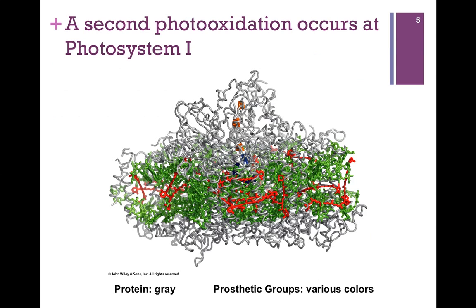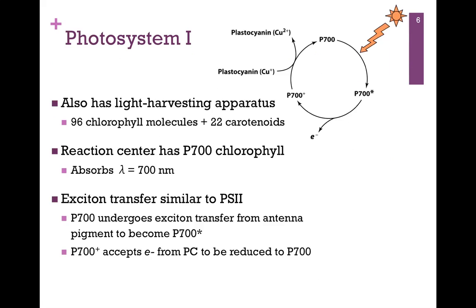Now we want to see what occurs at Photosystem I. Here's the model for the structure of Photosystem I. Again, the protein is in gray, similar to Photosystem II — a protein complex with multiple prosthetic groups that are going to collect and transfer light energy. A similar event occurs here: there is a light harvesting apparatus composed of about 96 chlorophyll molecules and 22 carotenoids, quite a complex of antennae intended to collect the light and pass it to the reaction center chlorophyll.